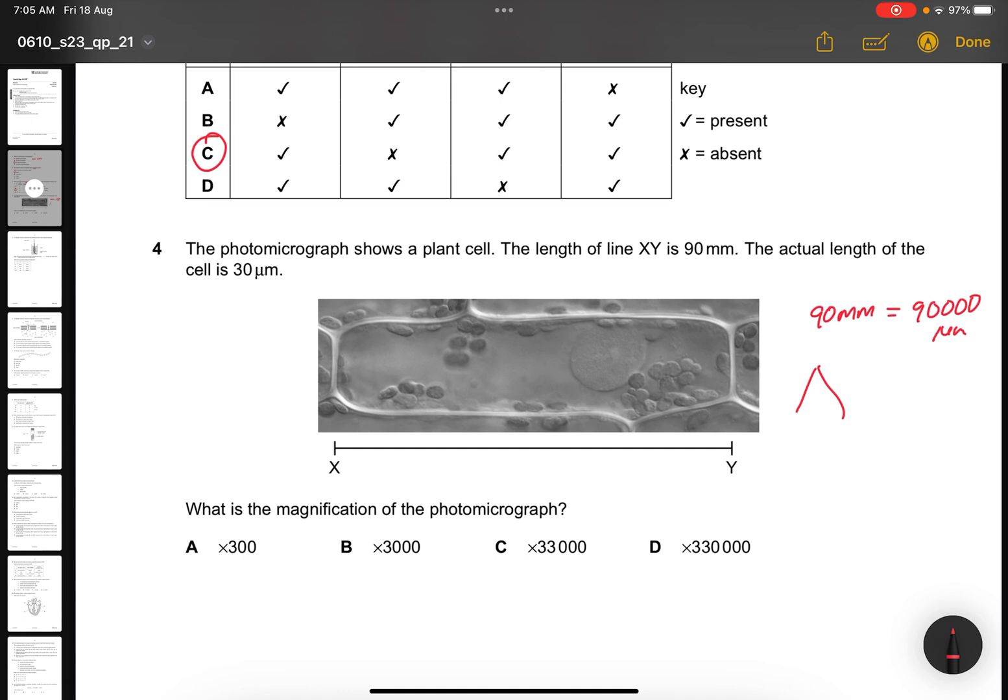Using the formula I over A over M, it will be 90,000 divided by 30, I will get 3,000. Answer B, 3,000.